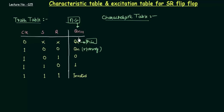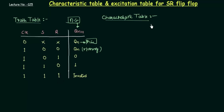When the clock is high and S and R are both one, it is invalid. We don't use this configuration in SR flip flop when S is high and R is also high. So by using this information we are going to make our characteristic table.